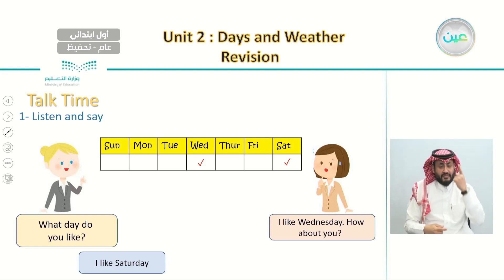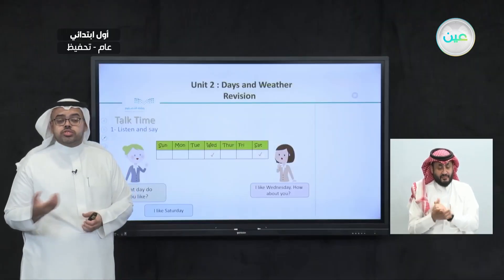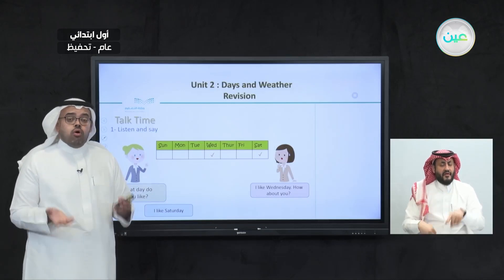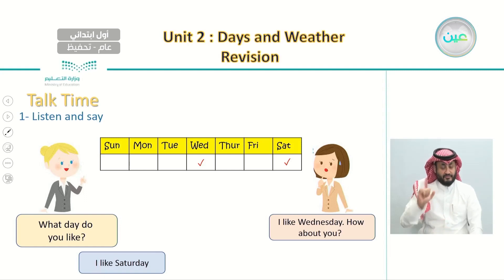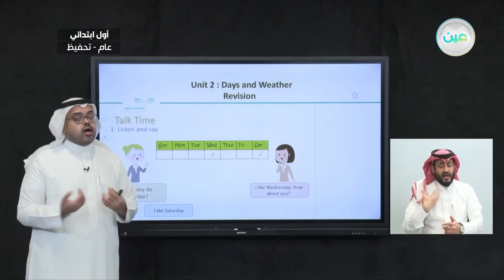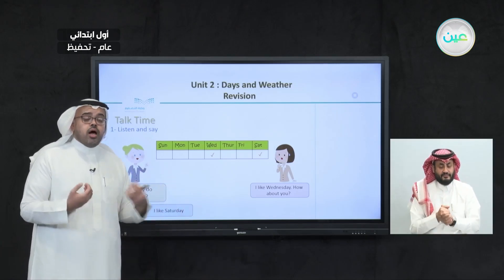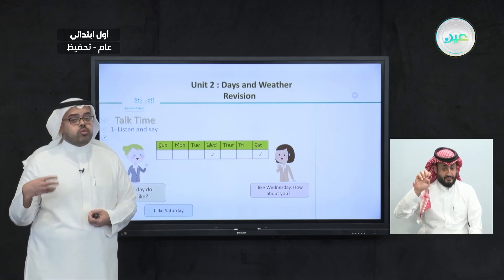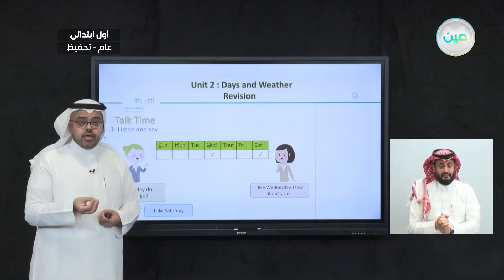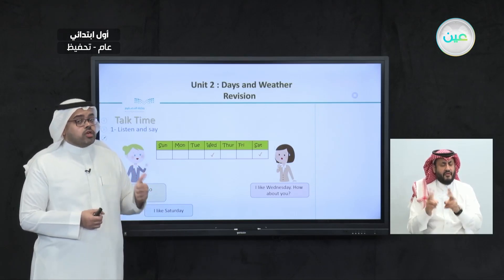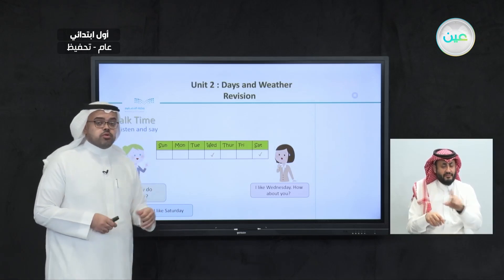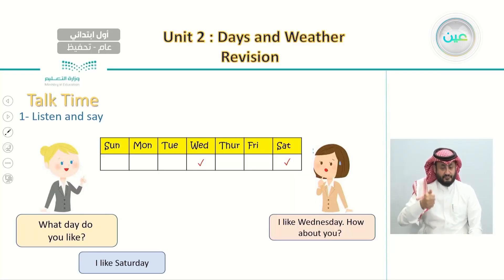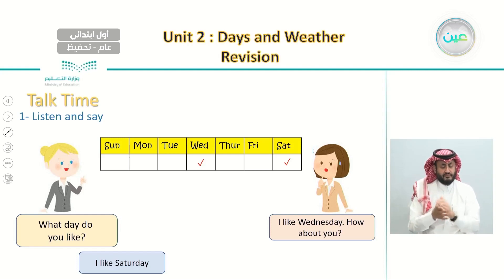She said, 'I like Saturday.' If you want to say what your favorite day is, you always start with 'I like.' For example, 'I like Friday,' 'I like Wednesday,' 'I like Monday.' We use 'I like' whenever we talk about any day. To ask someone about their favorite day, the question is always 'What day do you like?' and the answer is 'I like' followed by the name of the day.